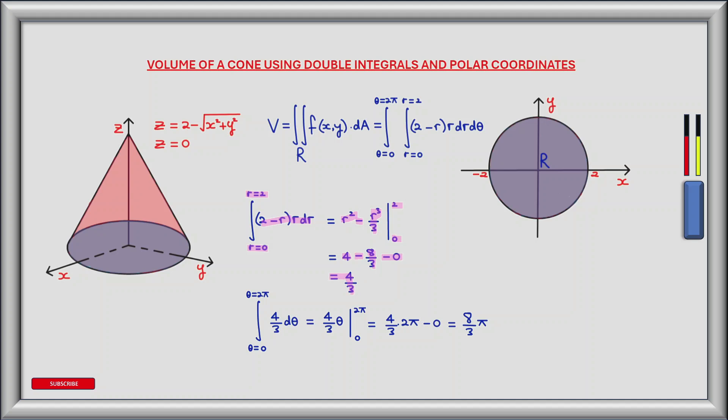Evaluating the outer integral, we integrate 4/3 dθ between θ equals 0 and θ equals 2π. The antiderivative of 4/3 is (4/3)θ, evaluated between 0 and 2π. Plugging in 2π gives 4/3 times 2π, and plugging in 0 gives 0.